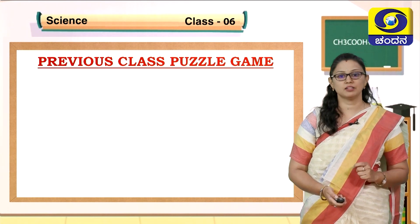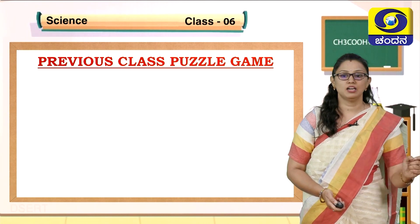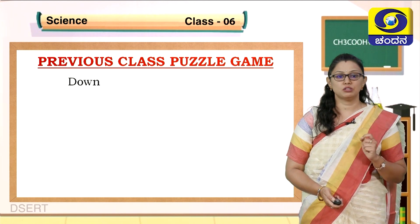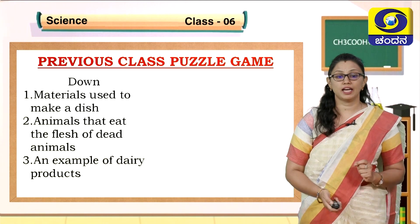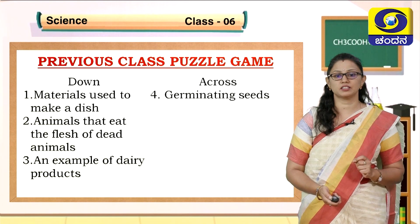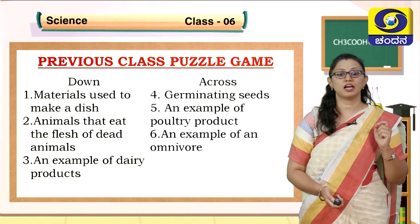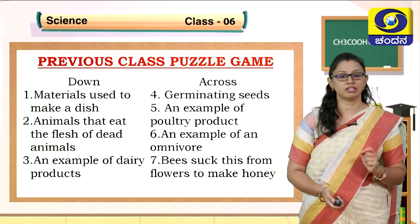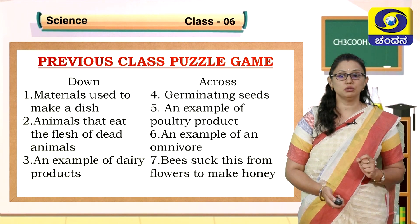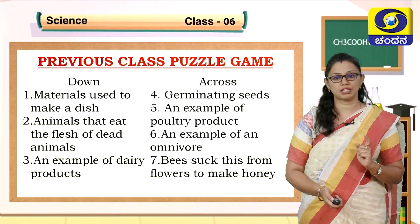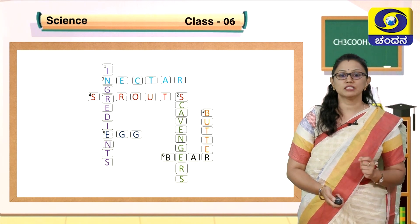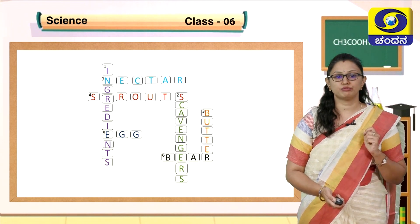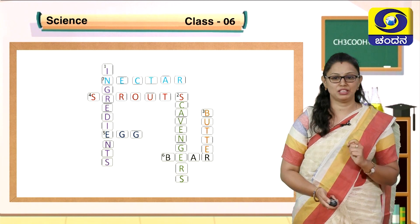Before starting the class, let us have a puzzle game about the previous class. Whatever you have learned, I have given some work also to do. The clues are: materials used to make a dish; animals that eat flesh of dead animals; an example of dairy products; germinating grains; an example of poultry products; an example of a cereal; and beans dug from flour to make onions. Let us read the answers: ingredients, scavengers, butter, sprouts, egg, beer, and nectar. I hope children will have enjoyed these puzzles.